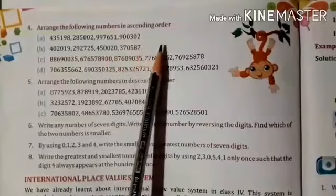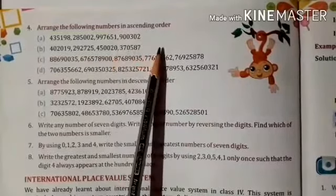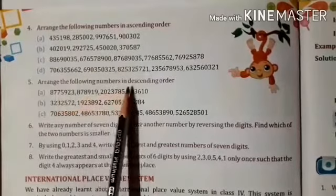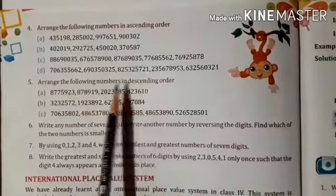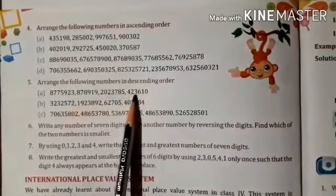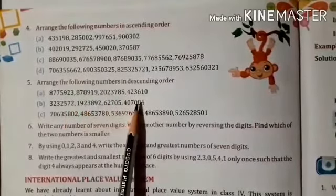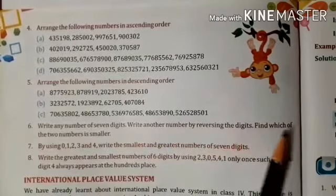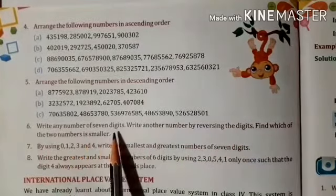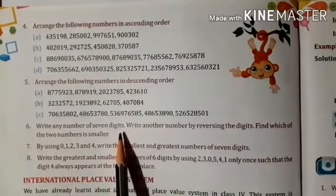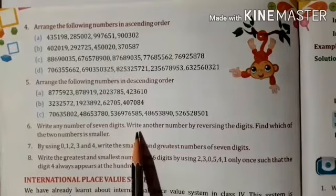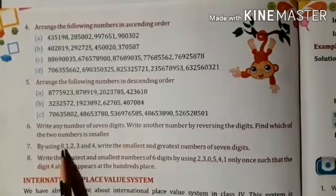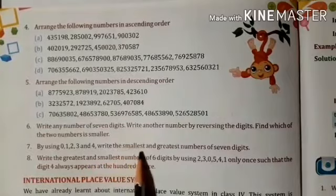Next, arrange the following numbers in ascending order — ascending order means from the smallest to the largest number. Next, arrange the following numbers in descending order — descending order means from the largest to the smallest number. Next, write any number of seven digits, write another number by reversing the digits, find which of the two numbers is smaller. Take any seven-digit number, reverse the digits, then compare which is smaller.